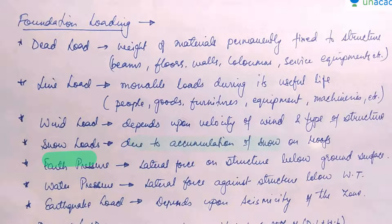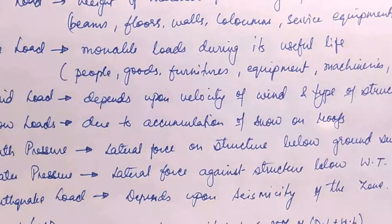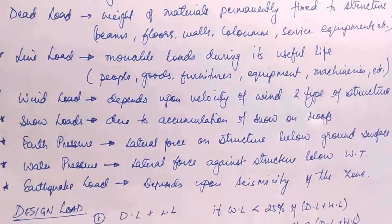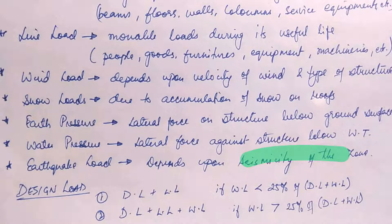Snow loads arise due to accumulation of snow on roofs in cold climate areas. Earth pressure is the lateral force on the structure below the ground surface. Water pressure is the lateral force against a structure which is below the water level.